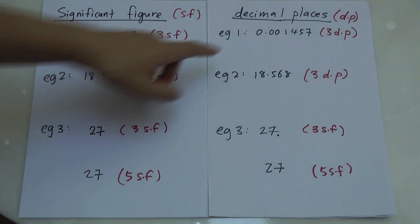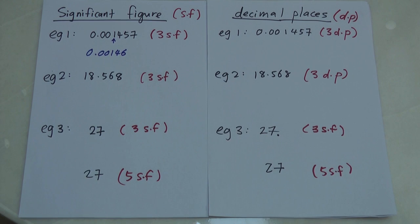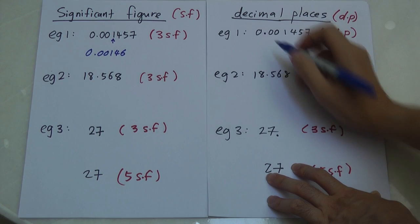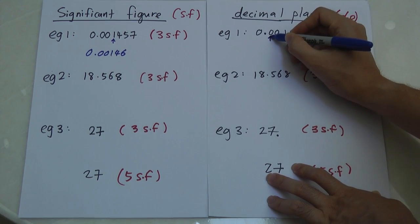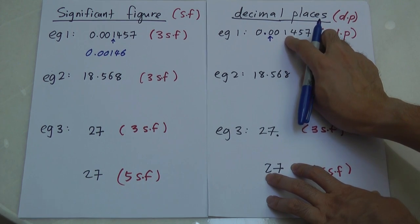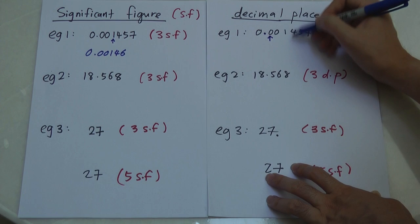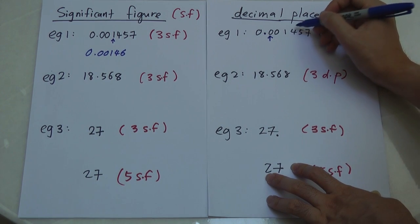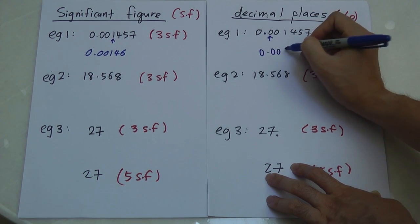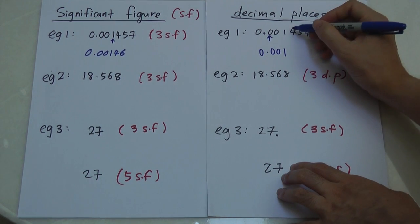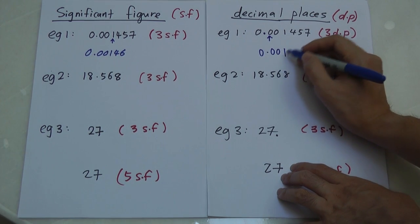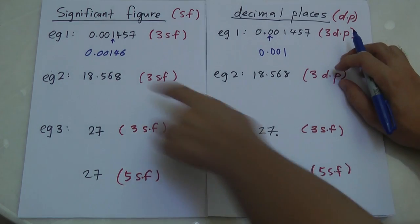For decimal places, we always count from the decimal point. So for three decimal places, the first number after the dot is the first, then second, then third. If the next digit is less than five, we ignore it — giving 0.001. If it's five or bigger, we round up to get 0.002.